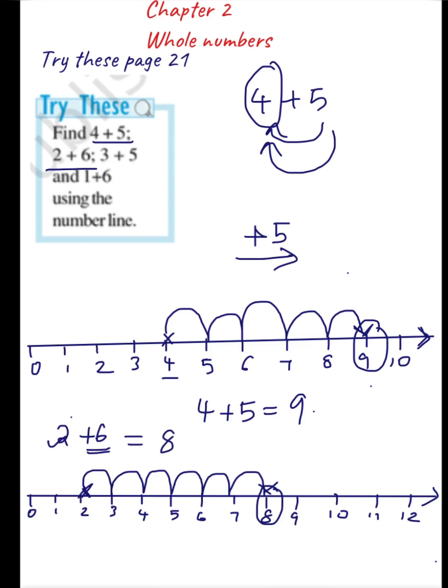So 1, 2, 3, 4, 5, 6 — and I have reached 8. The answer for this question is 8. I started from 2 and moved 6 steps towards the right and reached 8. So 2 plus 6 equals 8. Very easy!